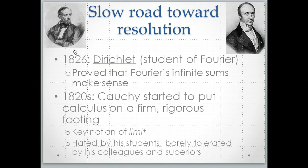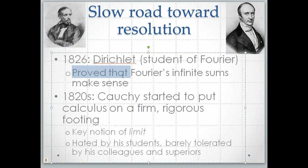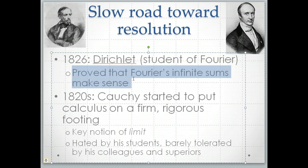One of the big first steps was in 1826. Dirichlet, who was a student of Fourier, he provided the first rigorous proof that Fourier's infinite sums really made sense. So remember that the infinite sums that Fourier was providing, it wasn't clear if they even made sense in a lot of cases. And he provided some conditions that guaranteed you that these infinite sums would make sense.